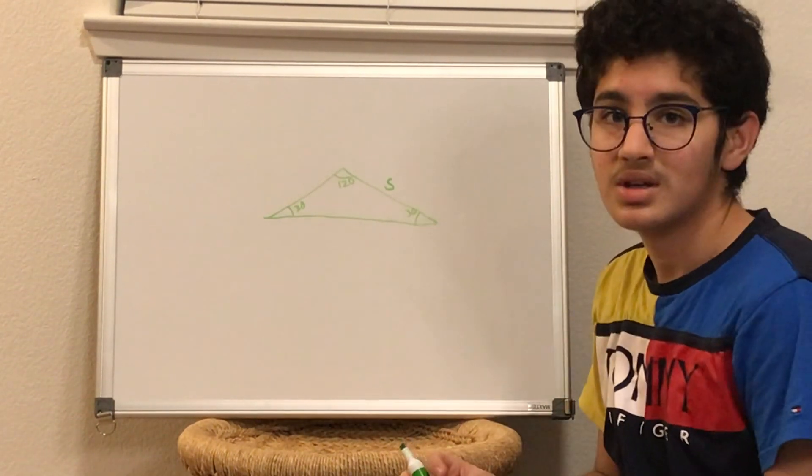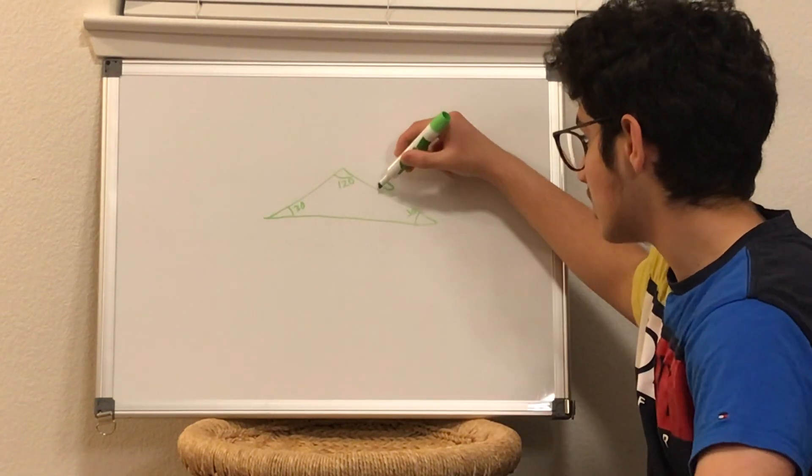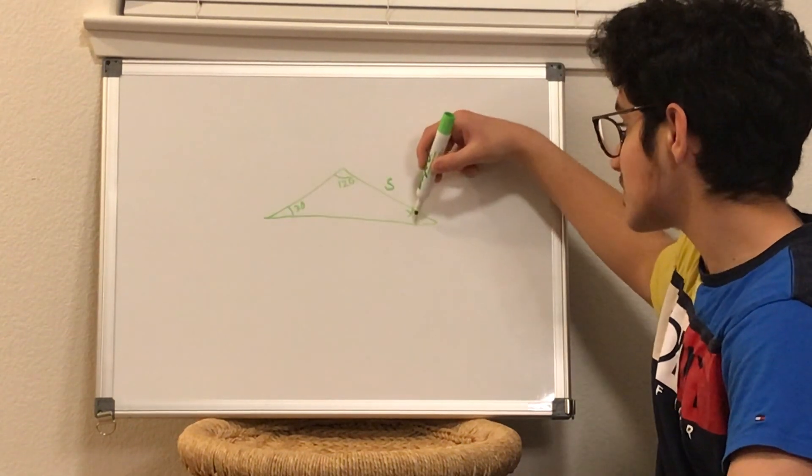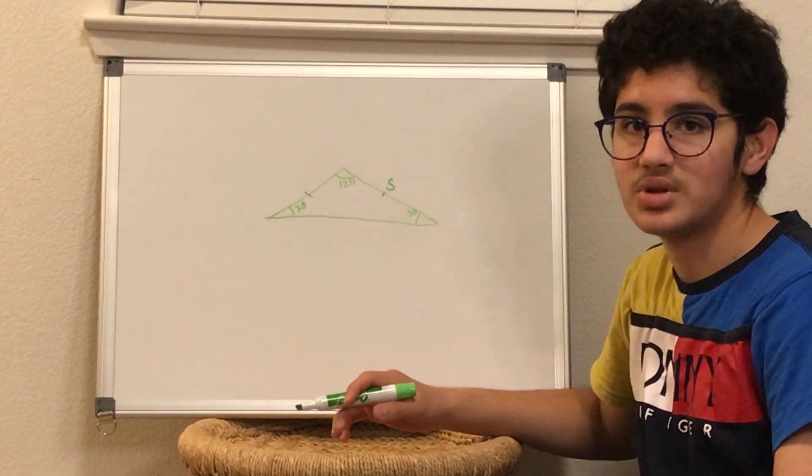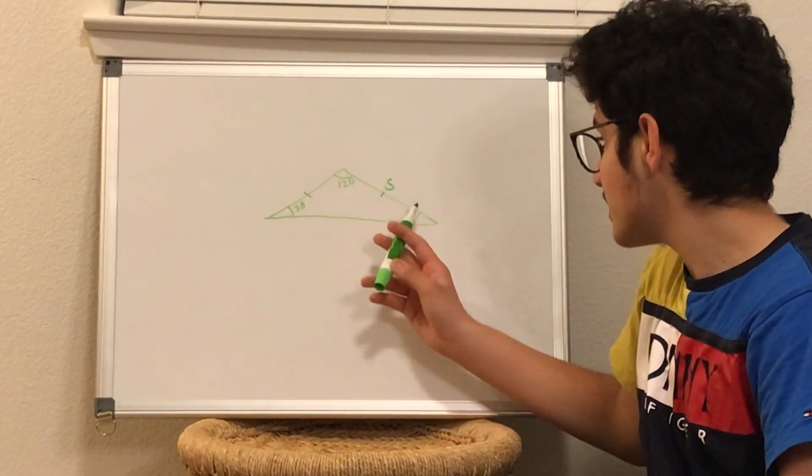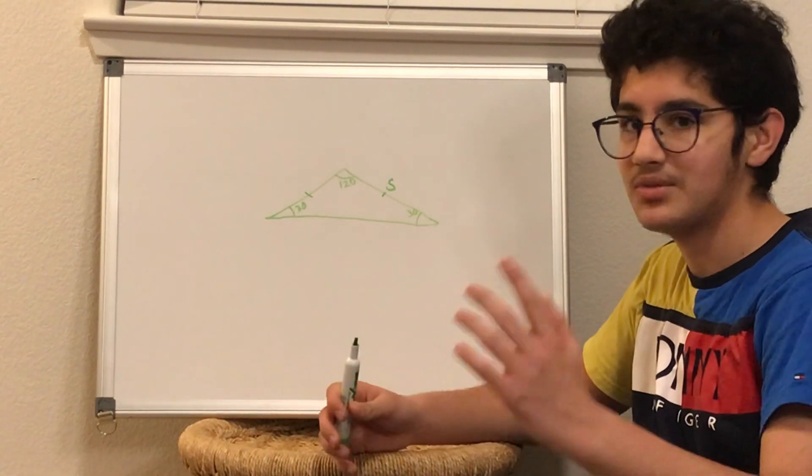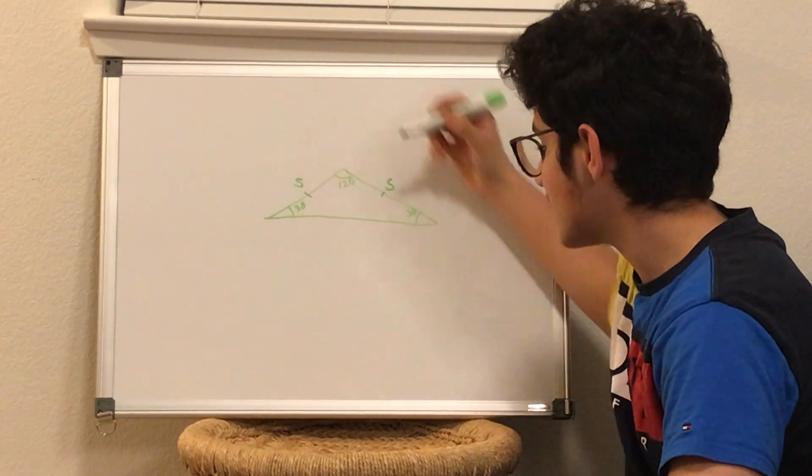The first thing we can notice, this side is opposite to the 30-degree side here and so this side must be equal to this side. That's just a property of isosceles triangles. When you have two equal angles, the sides opposite them will be congruent which means they'll have the same length. So this is S, this also must be S.